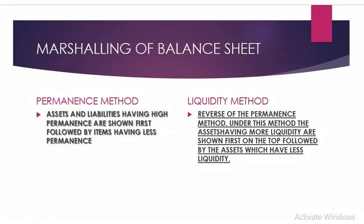Marshaling of the balance sheet means how we arrange and write the balance sheet — it is very important. The components of the balance sheet should be presented in a particular manner. Under the permanence method, assets and liabilities of a long-term or permanent nature are shown first, followed by those of less permanence. Under the liquidity method, it is the opposite — the asset with the most liquidity, that is, the asset which can be converted into cash most easily, is shown first.